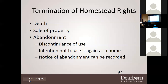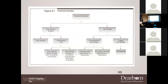If you intend not to use a property as your home again, you're terminating that homestead status. A notice of abandonment can be recorded. Looking at the overall structure of estates: freehold estate is the highest and best; it goes down to fee simple and life estate, both requiring no liens. Fee simple breaks into defeasible fee, which divides into determinable fee and condition subsequent. Life estates can be conventional — either ordinary, with remainder, or reversionary — or legal, which is your homestead.